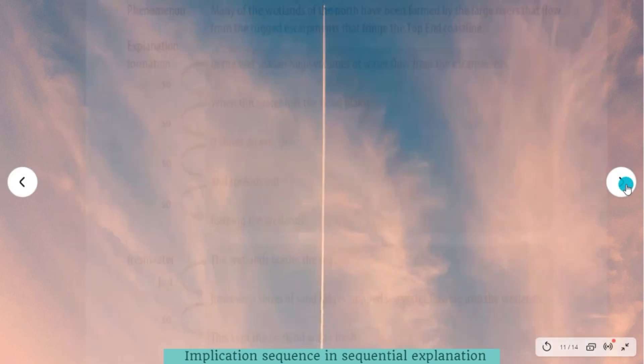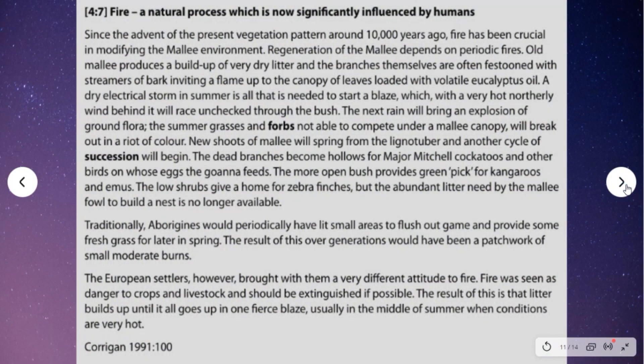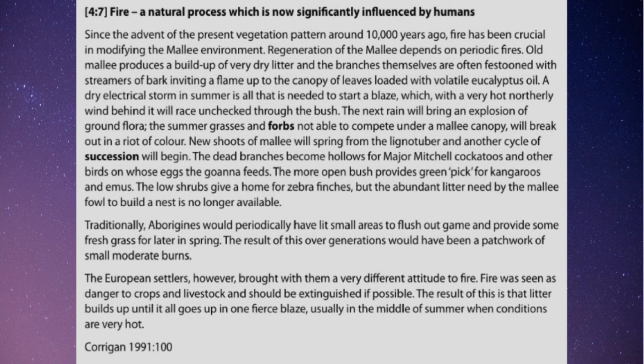The implication sequence is explicated in the figure shown. Sequential explanations vary widely according to the particular phenomenon being explained, as exemplified in the following text. This text explains the role of fire in the growth cycles of the Mali ecosystem. This cycle is defined partway through as a succession. The implication sequence is also followed by an extension stage that contrasts Aboriginal and European influences on the fire regime.